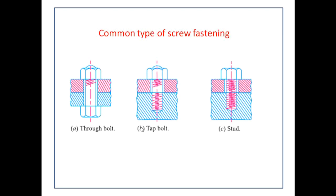Different common types of fastening are present — how to join nuts and bolts for different applications. First is the through bolt, where a hole passes through both elements, a bolt is inserted through, and a nut is applied at the end to join them. Second is the tap bolt, where one element has a through hole and the other element has a tapped hole with matching dimensions — no through hole in the second element. You insert the bolt from the first element and the tapped portion acts as a nut.